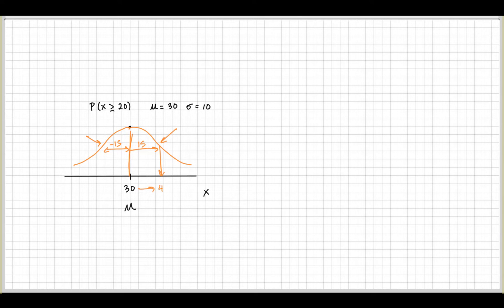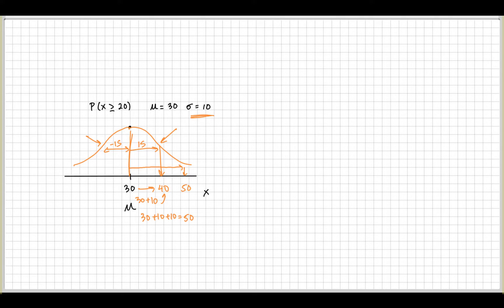So if the standard deviation is 10, then one standard deviation to the right of the mean is 40, because you add 10 to 30. Two standard deviations away gives you 50 — you add another 10 to 40, or add 20 to 30. Three standard deviations gives you 60: 30 plus 10 plus 10 plus 10.